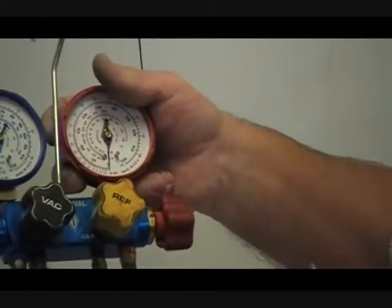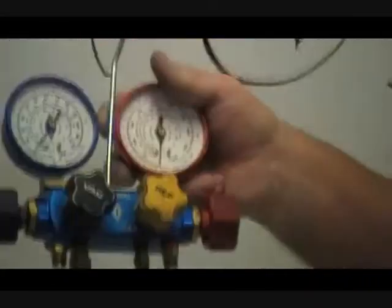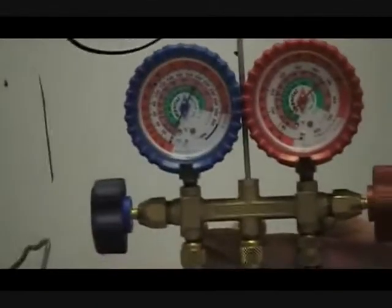The high pressure gauge, the red gauge, goes up to 500 pounds on the standard refrigeration set. This one goes up to 800.